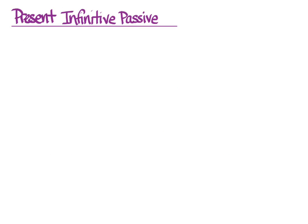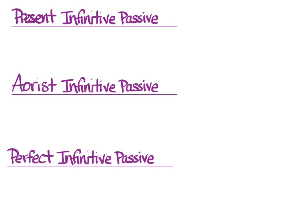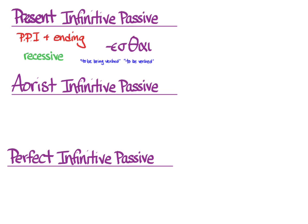We still need to do infinitives — present, aorist, and perfect infinitive passive. The present infinitive passive comes, of course, from the first principal part, and our new ending is -esthai. Accent is recessive. The default translation is 'to be being verbed,' or more usually 'to be verbed.' So you take your stem lu, add the ending -esthai with recessive accent, and you get luesthai — 'to be being freed.'